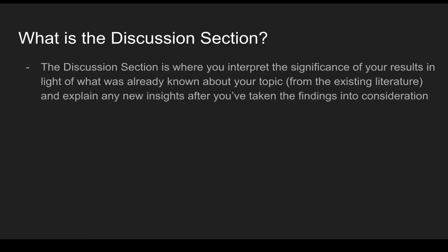What exactly is a discussion section? The discussion section of a research paper is where you interpret the significance of your results in light of what's already known about the topic and relate it back to the existing literature. We know what about a topic from studies reviewed in the literature review, but this is where you actually relate that literature to your findings. You also explain any new insights after you've taken the findings into consideration.